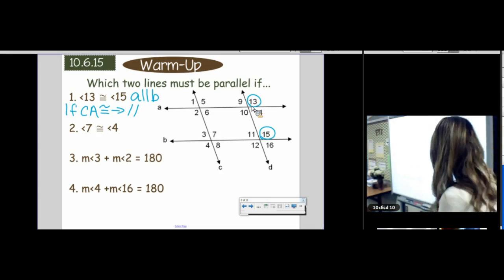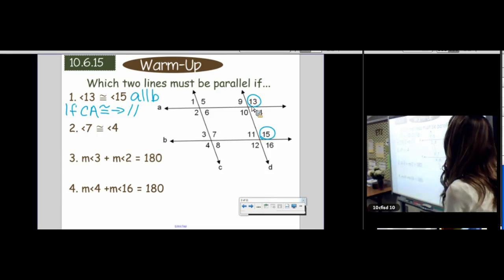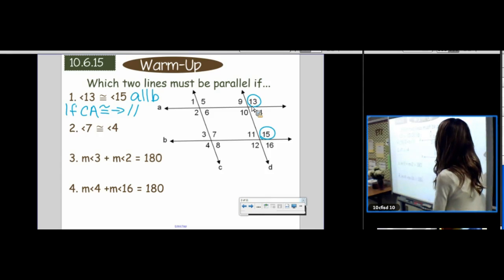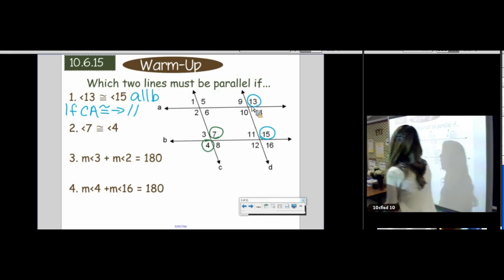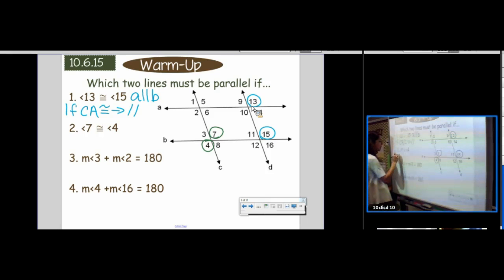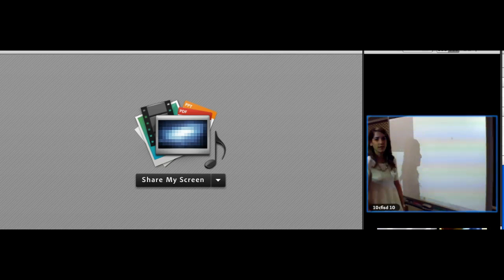Number two. Angle seven is congruent to angle four. So I can almost write it the same way I was writing the last one. If vertical angles are congruent, then, well, then nothing.